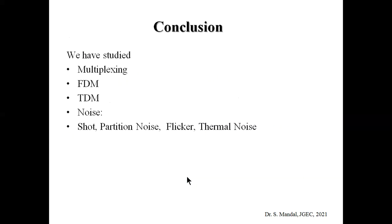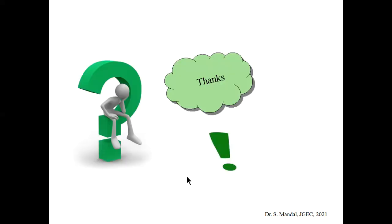In summary, we covered different multiplexing techniques: FDM, which is bandwidth efficient using defined frequency spectra, and TDM, which sends different message signals at different time instances. We also studied internal noises — shot noise, partition noise, flicker noise, and thermal noise — as well as external noises such as atmospheric noise, solar noise, cosmic noise, and industrial noise. Thank you. If you have any problems, please post them and I will be happy to answer.